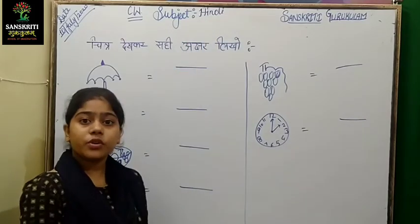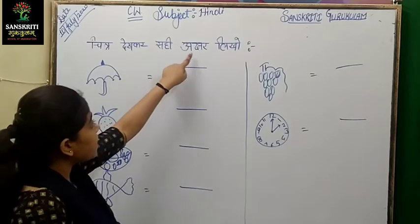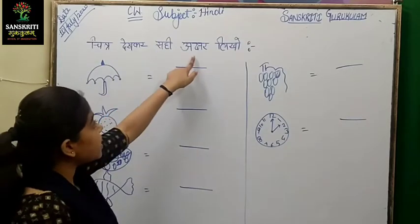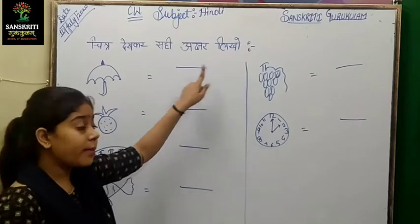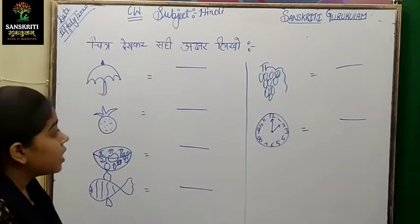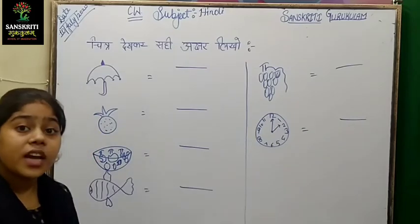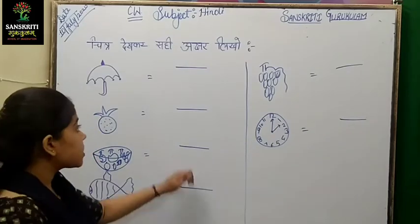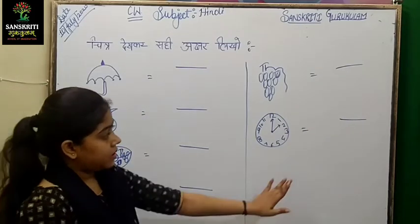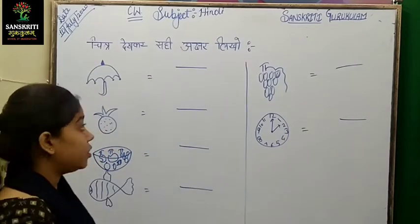Now I am going to take up: चित्र देखकर सही अक्षर लिखो. उसका मतलब है पहले आपको चित्र देखना है, चित्र पिक्चर्स को आइडेंटिफाई करना है, चित्रों को पहचानना है, उसके बाद यहाँ आपर अक्षर लिखने हैं. चलिए मैं आपको चित्र की पहचान कराती हूँ.